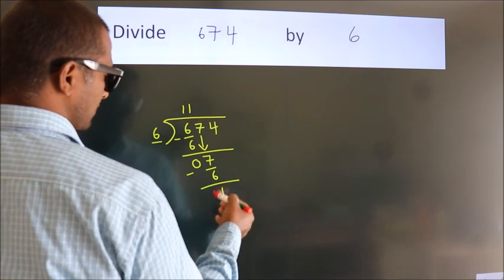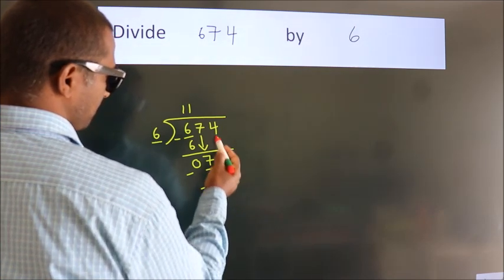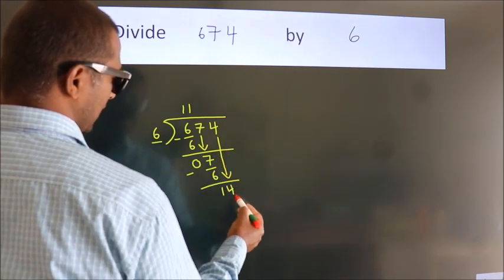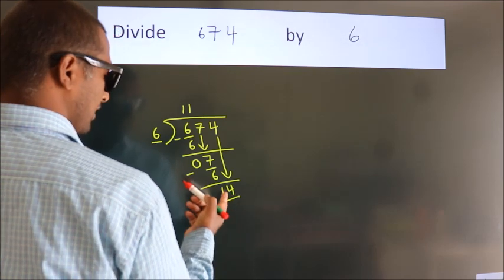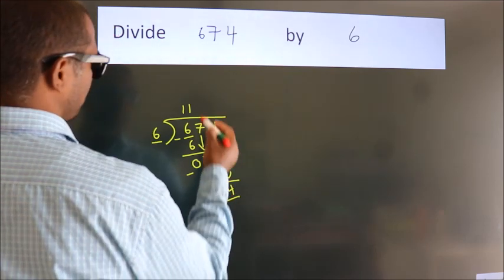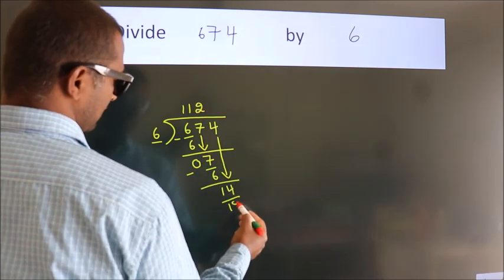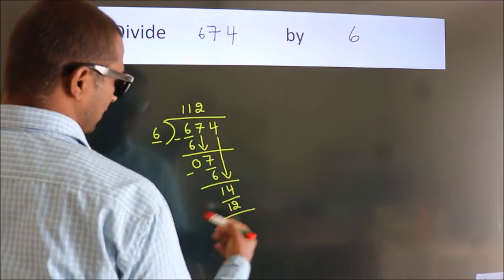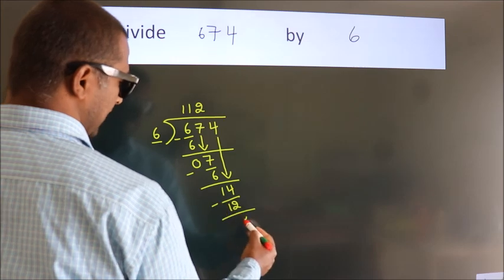After this, bring down the beside number, so 4 down, so 14. A number close to 14 in 6 table is 6 twos, 12. Now, we subtract, we get 2.